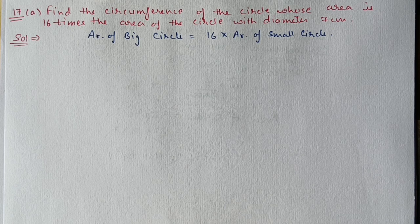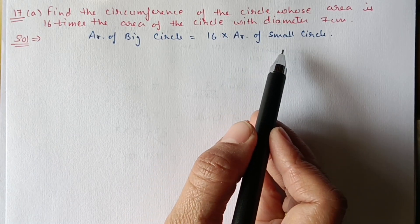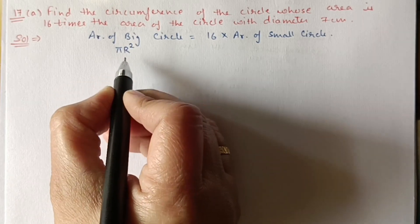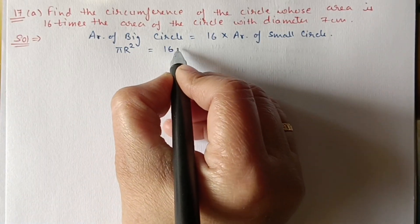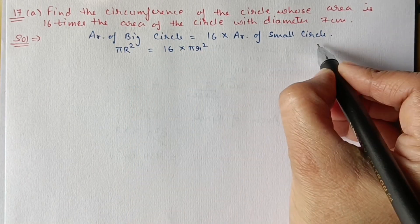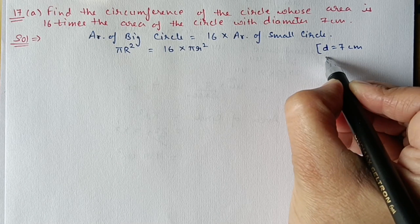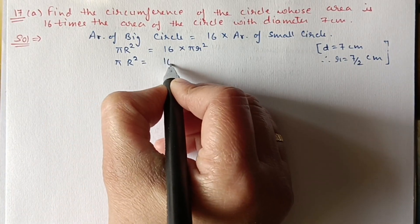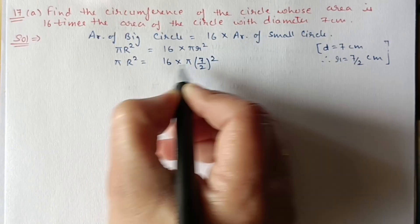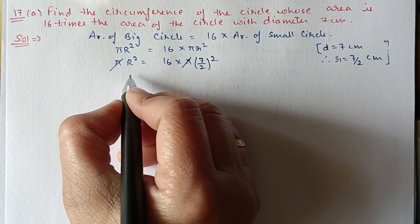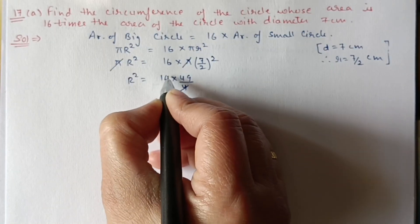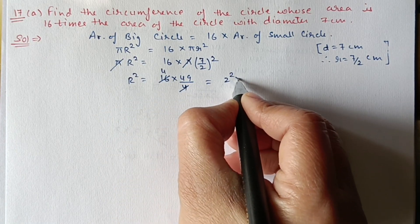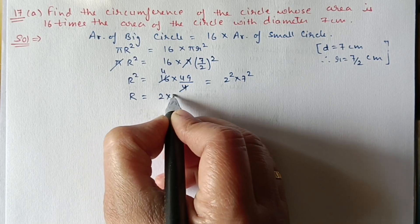Next, Question 17 part a. Find the circumference of the circle whose area is 16 times the area of a circle with diameter 7 centimeter. We have two circles; the big circle has radius R. For the small circle, diameter = 7 so radius = 7/2. Setting πR² = 16 × π × (7/2)², π cancels and R² = 16 × 49/4 = 4 × 49 = 2² × 7². So R = 14 centimeter.